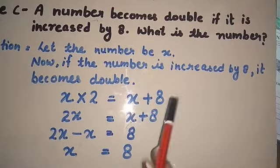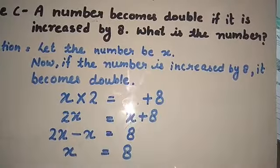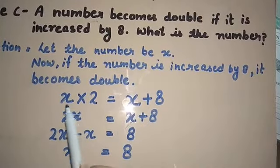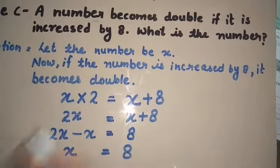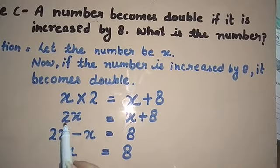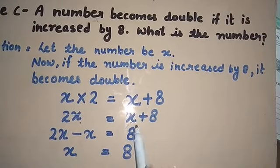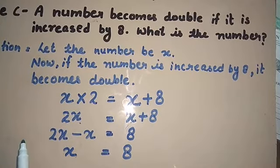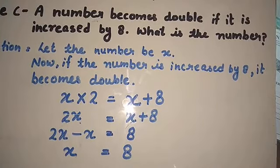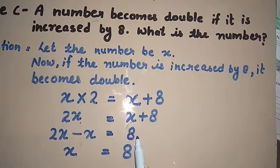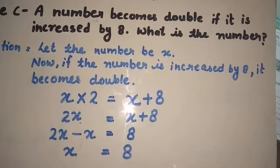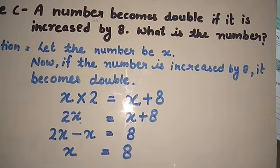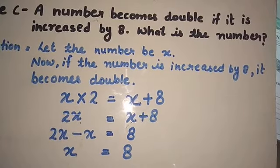Number is not given, so in place of question we are using X. So here X plus 8, as it is. Now X, X, we will shift to one side, one hand side, in left hand side. So this X will change into minus X. And here as it is we will write 8. 2X minus X is equal to 8. 2X is equal to 8.